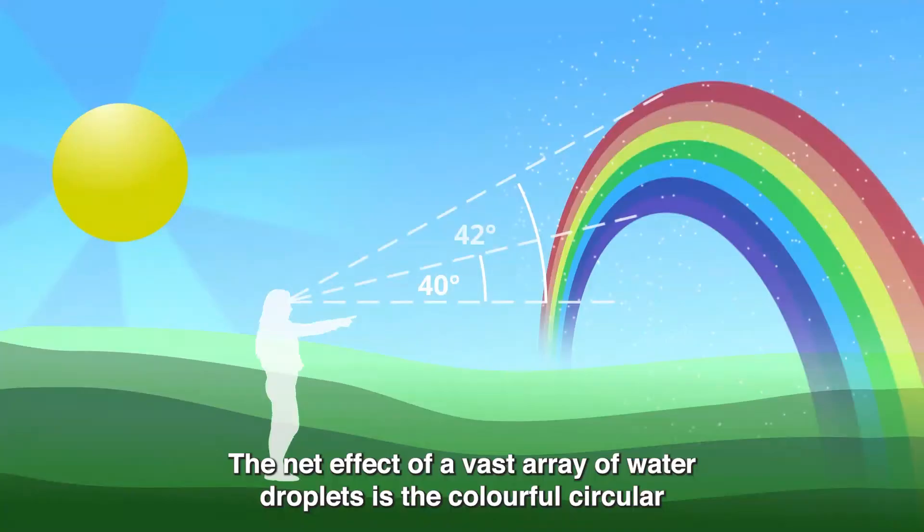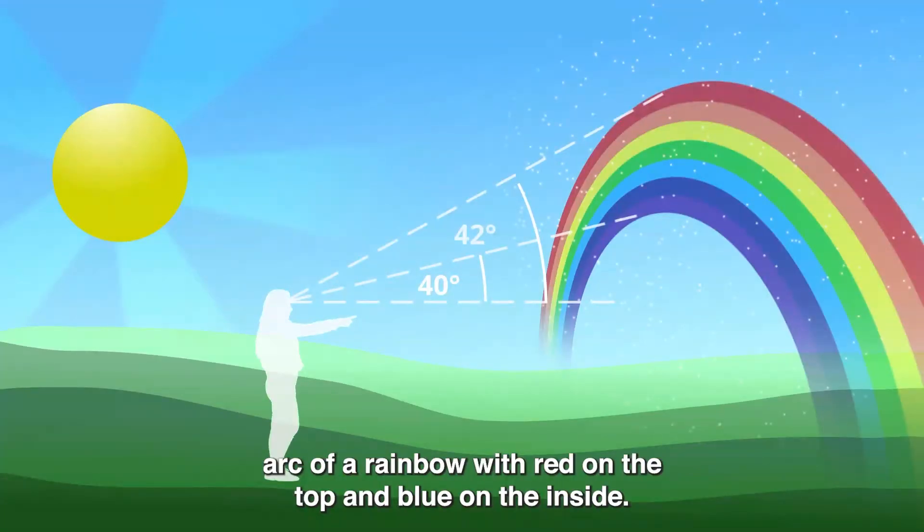The net effect of a vast array of water droplets is the colorful circular arc of a rainbow with red on the top and blue on the inside.